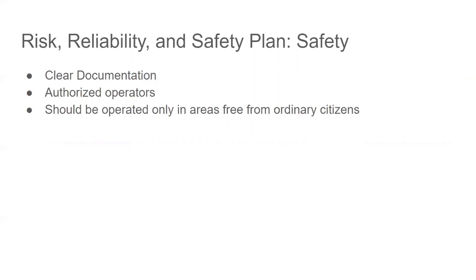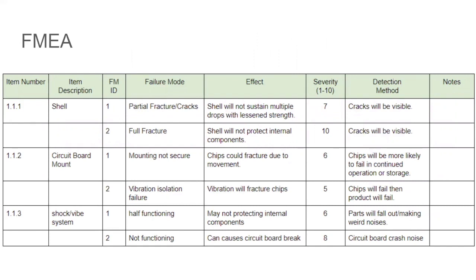Next I'm going to talk about the failure mode and effect analysis or FMEA. The FMEA items we have analyzed includes the shell, circuit board mount, and shock/vibration system. The most severe failures would be if the shell fully fractured or the shock and vibration system did not function properly. These failures would cause internal components to be vulnerable if not properly addressed.